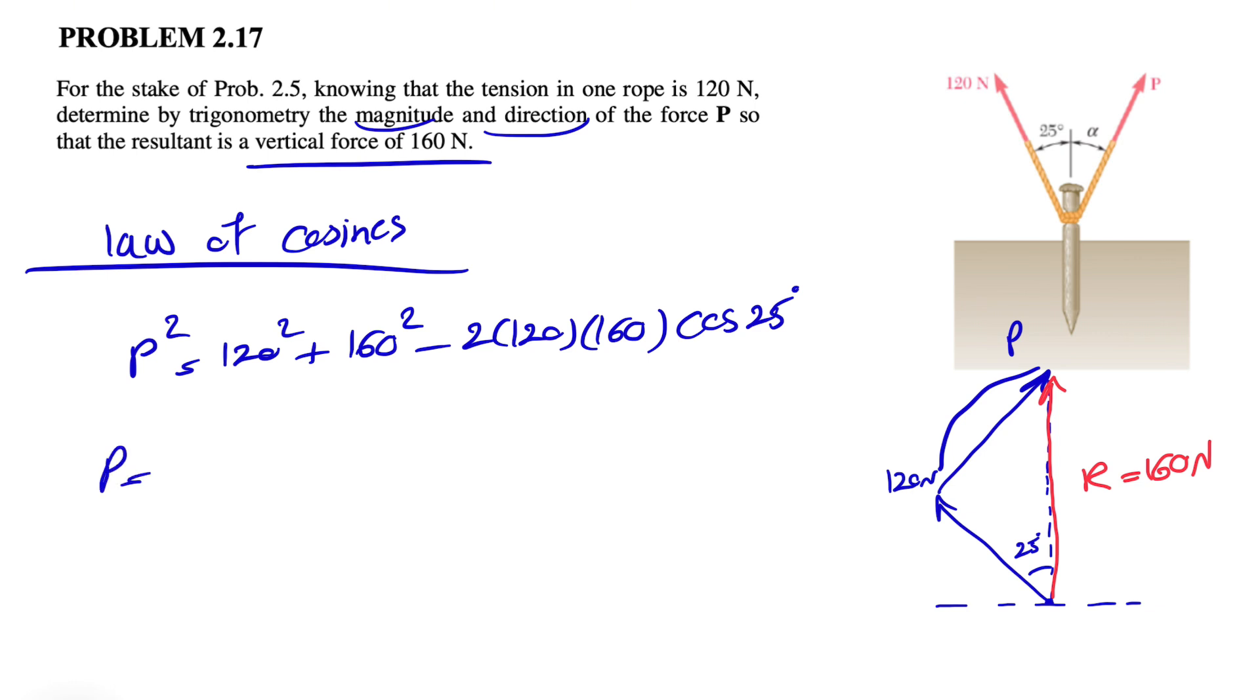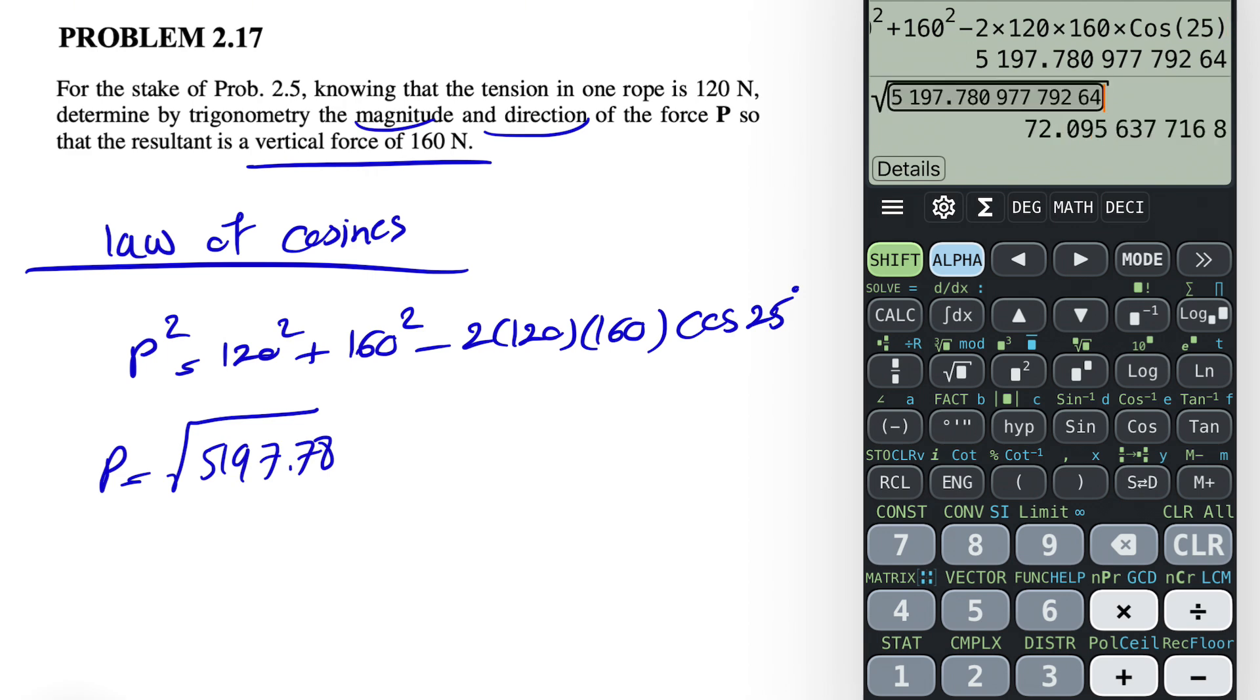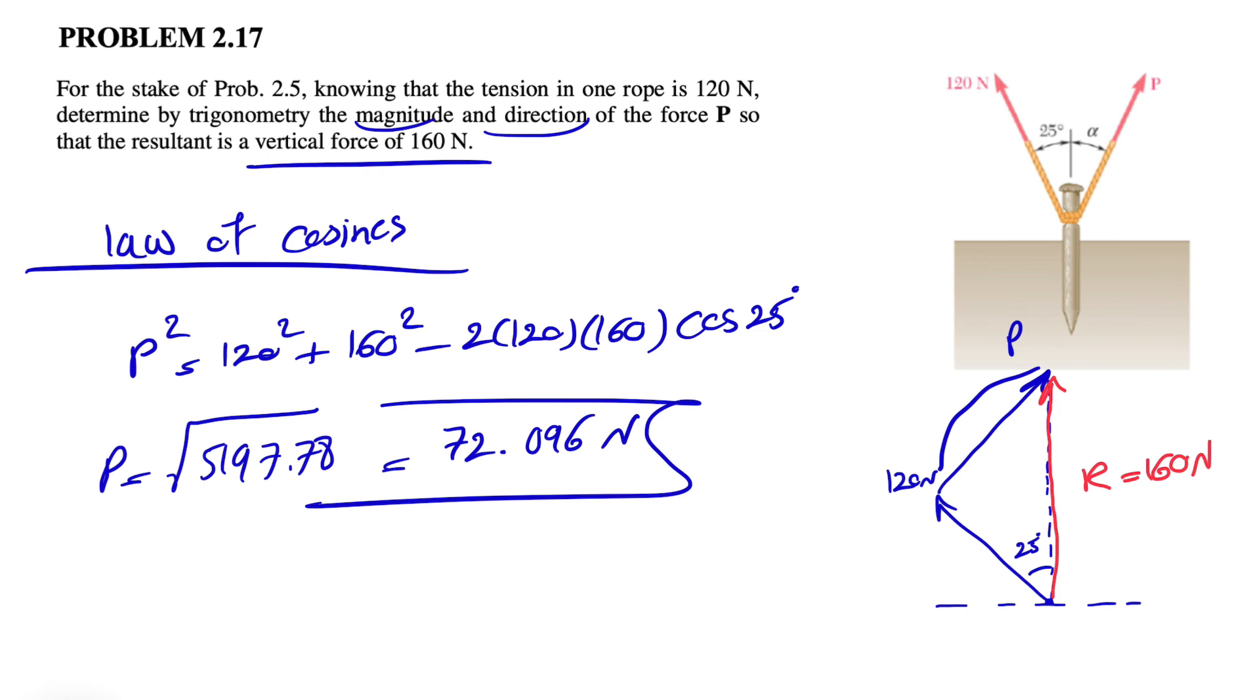So our P would be the square root of whatever we have in the previous step. We have 120 squared plus 160 squared minus two times 120 times 160 times cosine of 25. That's going to be 5197.78. And if we find the square root of this, it's going to give us 72.096 N. So we found P.